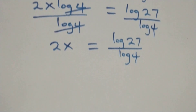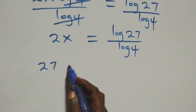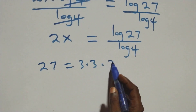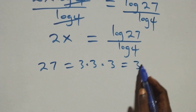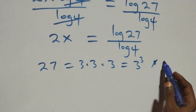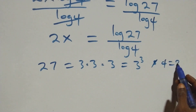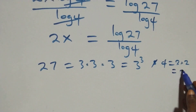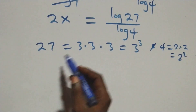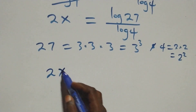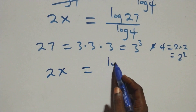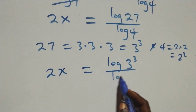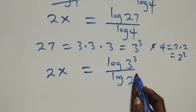We can express twenty-seven as three times three times three, which is three cubed. Also, four can be written as two times two, which is the same as two squared. So we have two x equals log of three cubed over log of two squared.